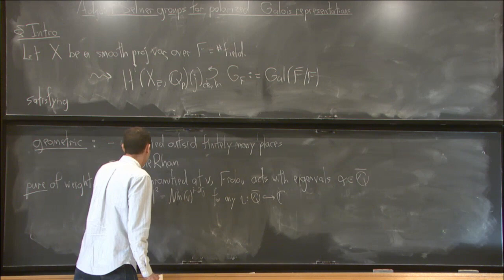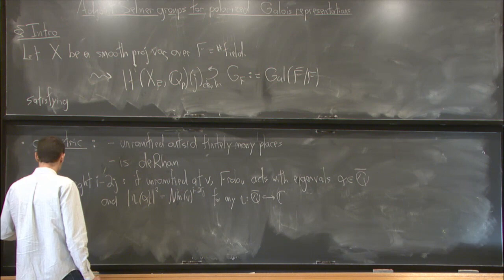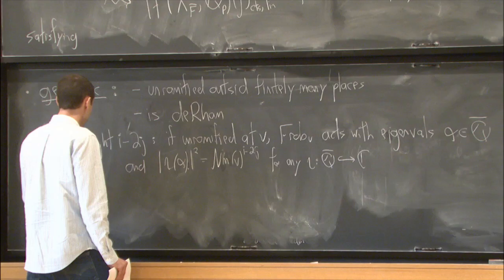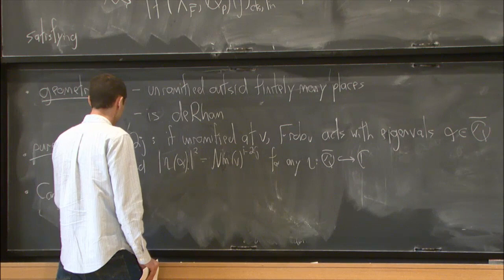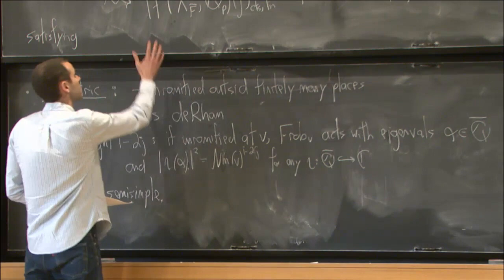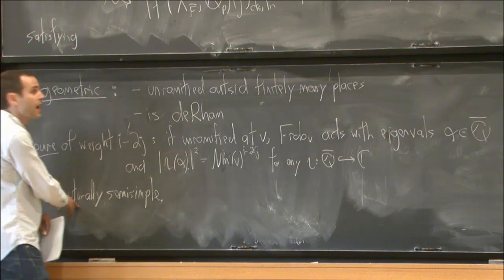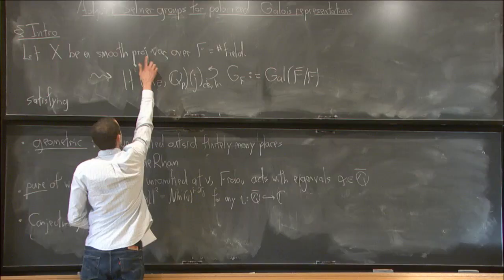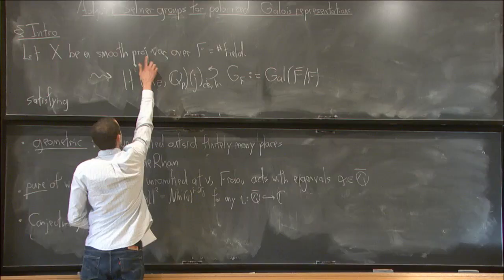One other property we don't know it satisfies, but hope it does, is that it's conjecturally semi-simple — this is a conjecture of Grothendieck and Serre. These nice properties really do depend, especially the semi-simplicity conjecture, on the fact that we're taking projective and smooth. So let's consider an example where that doesn't hold.